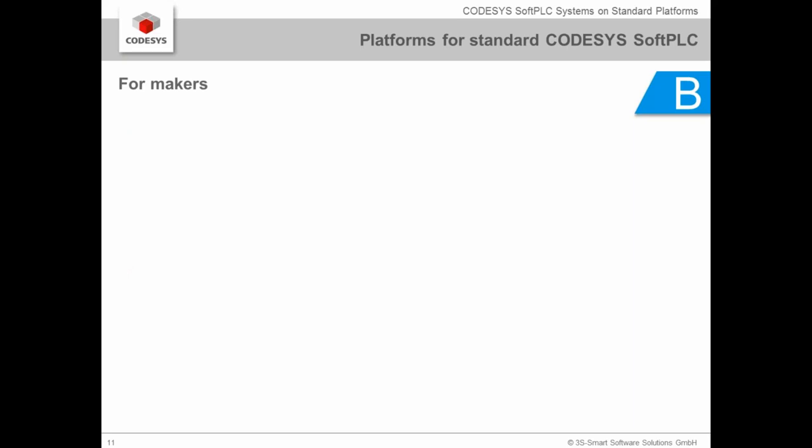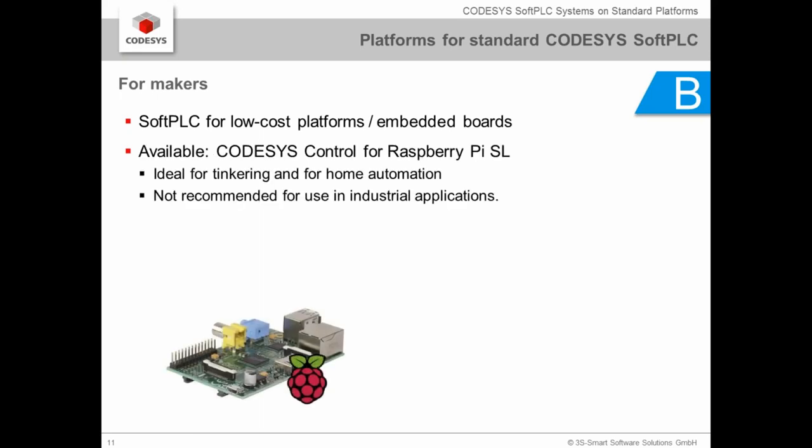The second platform is for makers: a soft PLC called CODESYS Control for Raspberry Pi SL is available for low-cost embedded boards. The 'SL' suffix stands for Single License, meaning the license is per device. The Raspberry Pi is very well known, with over 4 million devices sold, and many are already running CODESYS. It's ideal for tinkering, makers, and home automation.